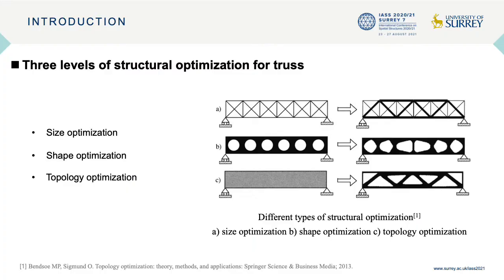Structural optimization problems can be roughly divided into three levels: size, shape, and topology optimization. Size level is usually to find an optimal cross-sectional area of bars or thickness of planes. Shape level focuses on the node position of bars or the shapes of holes. Topology level generally involves the number, shape, and position of openings in the continuum or the interconnection between nodes. When simultaneously considering those three levels, these problems can be challenging.